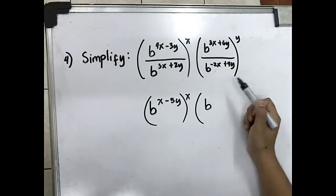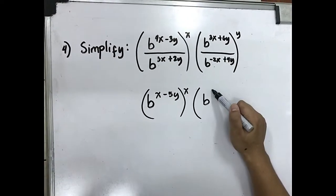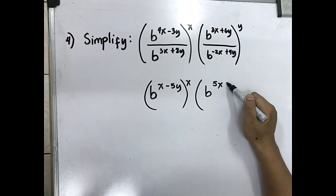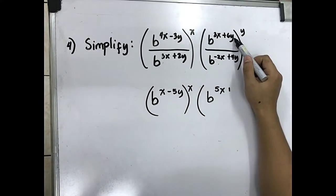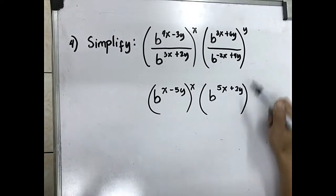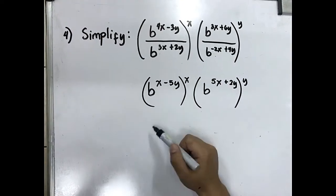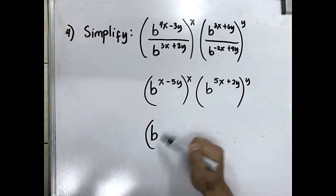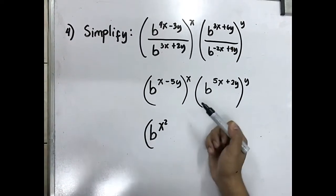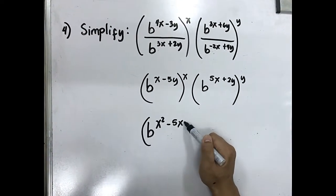3x minus negative 2x is 5x. 6y minus 4y is positive 2y. Multiply the exponents: x times x is x squared, negative 5y times x is negative 5xy.